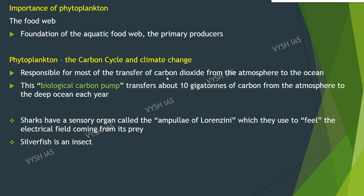Phytoplankton are responsible for most of the transfer of carbon dioxide from the atmosphere to the ocean. They consume carbon dioxide, and the carbon stored in phytoplankton is very similar to carbon storage in a normal plant. Most of the carbon in phytoplankton returns to the near surface, but some falls into the ocean depths as well. This biological carbon pump transfers about 10 gigatons of carbon from the atmosphere to the deep ocean every year, so even small changes in phytoplankton growth may affect carbon dioxide concentrations.